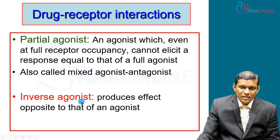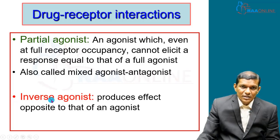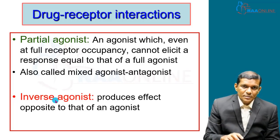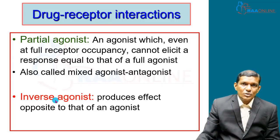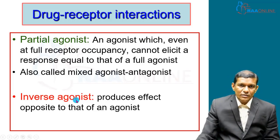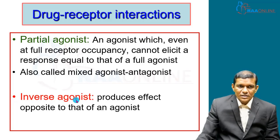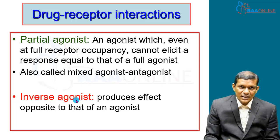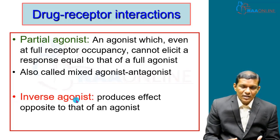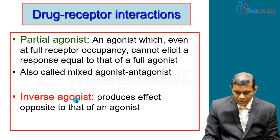The fourth term is inverse agonist. It binds to the receptor but produces the effect opposite to that of the agonist. For example, beta-carboline binds to the benzodiazepine receptors — the GABA receptors. Normally when benzodiazepine binds, it causes CNS depression and is used as an anticonvulsant or sedative-hypnotic. But beta-carboline, the inverse agonist, binds to the same site and can produce convulsions — the exact opposite effect.